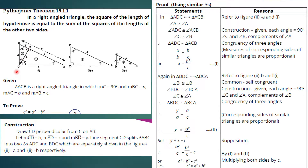The line segment CD splits triangle ABC into two triangles: triangle ADC and triangle BDC. We label triangle ADC as triangle 1 and triangle BDC as triangle 2.